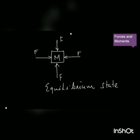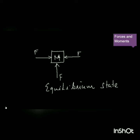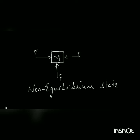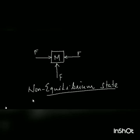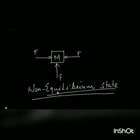Now let's assume we remove one force from the system. We now have only three forces on the system. Two forces cancel each other, and the resultant force on the body is the force acting in the positive Y direction. Because there is a resultant force on the body, the body is in a non-equilibrium state — it is not in equilibrium. This is the condition we study in Engineering Mechanics.